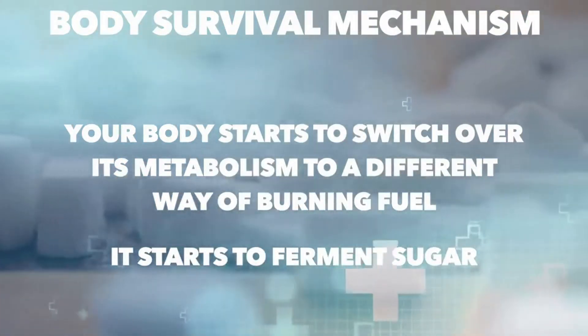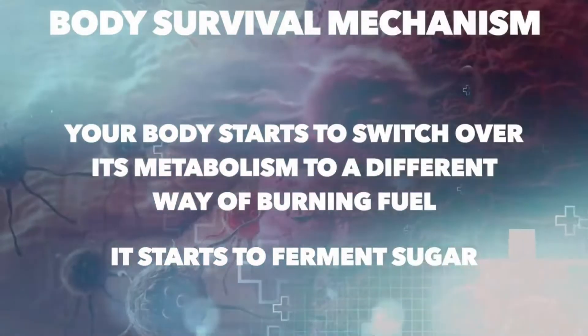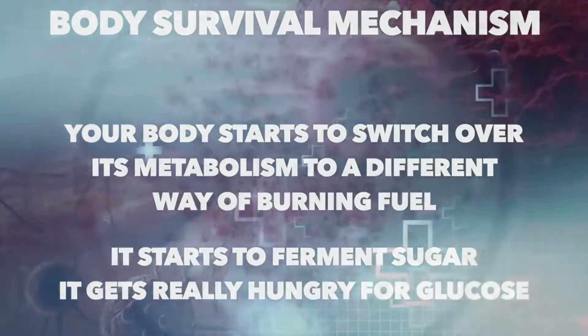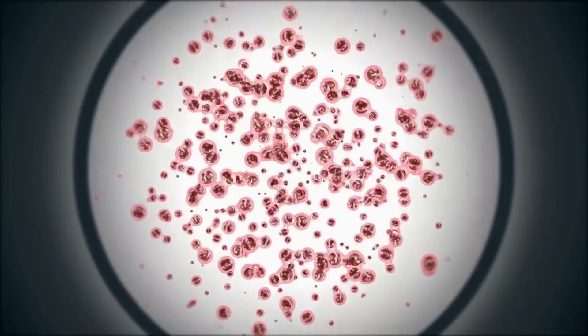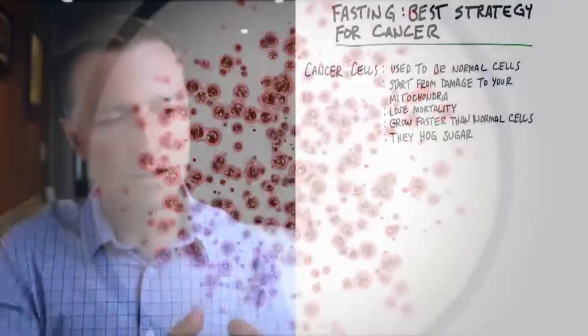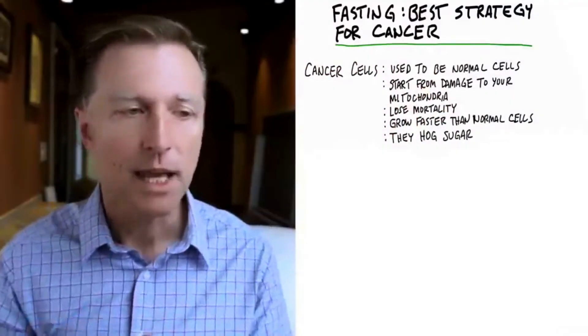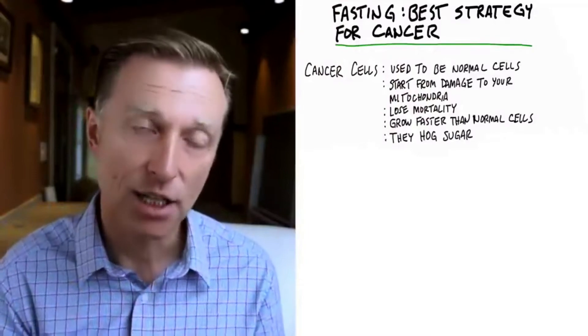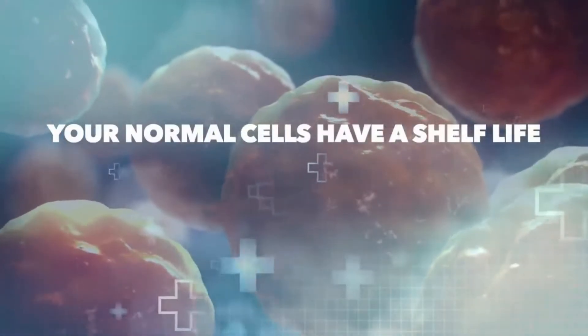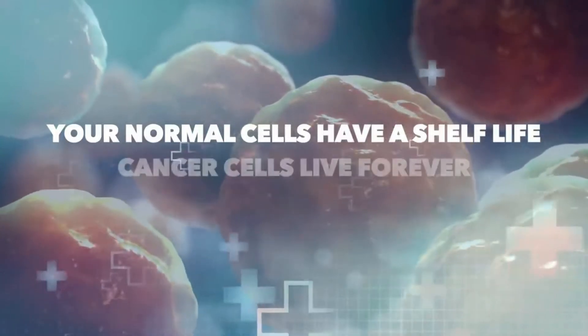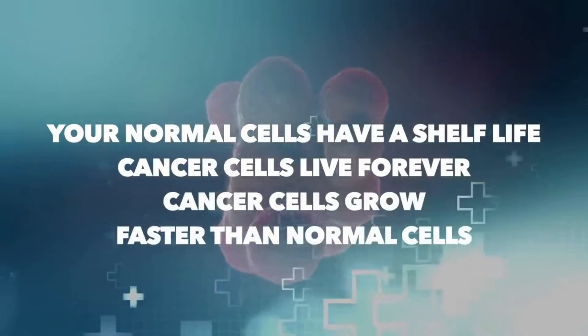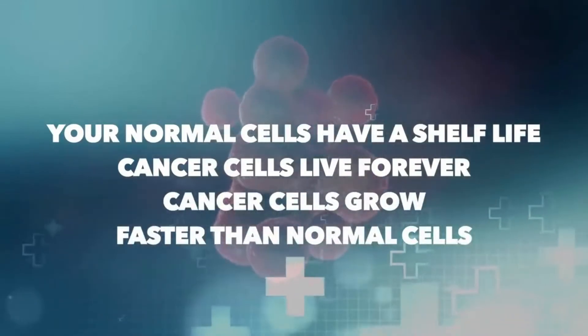So it starts to ferment sugar. And when it starts to ferment sugar and turn into a cancer cell, it starts to become extremely hungry for glucose. Now, it also eats other things, which we're going to talk about, but sugar provides the most fuel for a cancer cell. In the process of a normal cell becoming a cancer cell, it also loses its mortality. In other words, it becomes immortal. So your normal cells actually have a limit. They can only live so long, but the cancer cells live forever. Cancer cells grow faster than normal cells, and they basically take over the body.